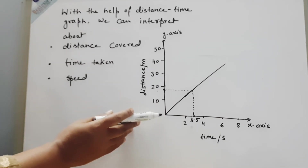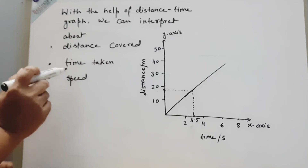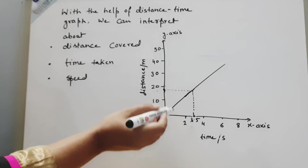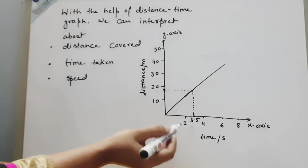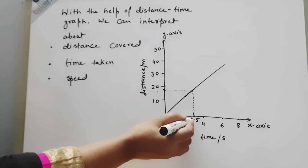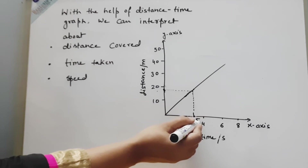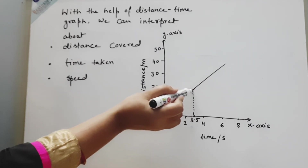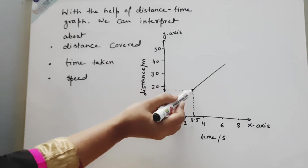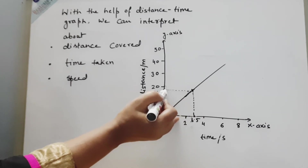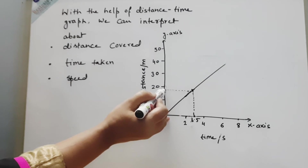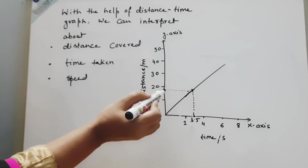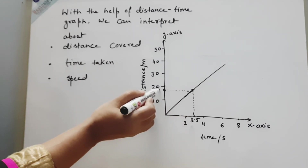Here is a graph, and with the help of this graph we will see how to find all three quantities. Suppose the question is: how much distance has been covered in 3.5 seconds? First, mark 3.5 seconds on the time axis — it comes between 2 and 4. Then draw a vertical line up to the graph, mark that point, and extend it horizontally to the y-axis. Since the y-axis is distance, the answer is approximately 18 meters. So in 3.5 seconds, 18 meters has been covered.